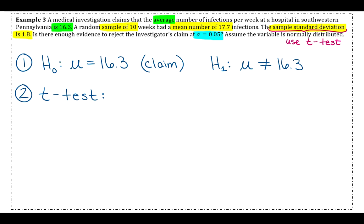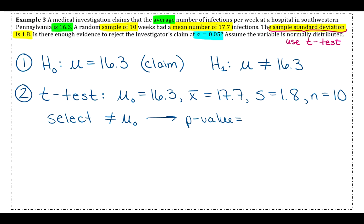so they gave us the sample standard deviation. So that tells us to go to t-test in our calculator. So you'll go to stat, go over to test, and then it's just the second one down. So select that, and then make sure you're on stats, and then we're just going to fill everything out. So mu naught is 16.3, x bar is 17.7, s stands for the sample standard deviation, so that's 1.8,